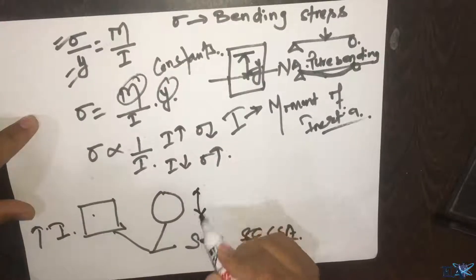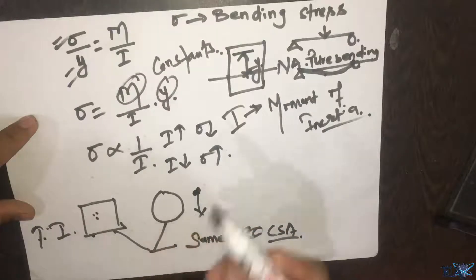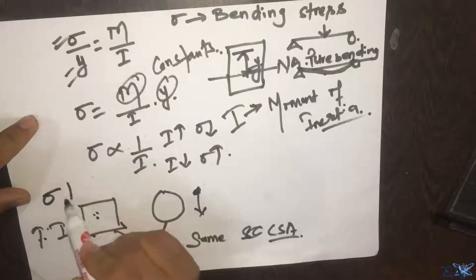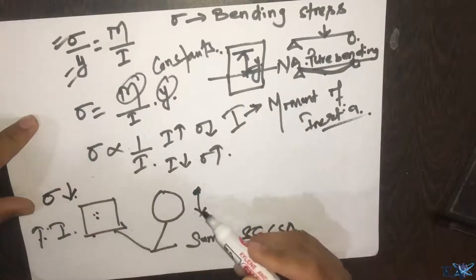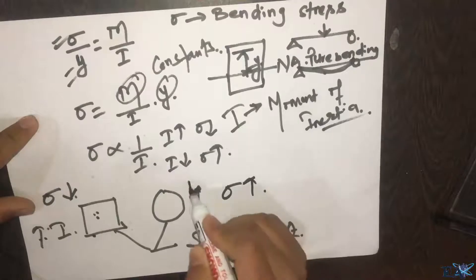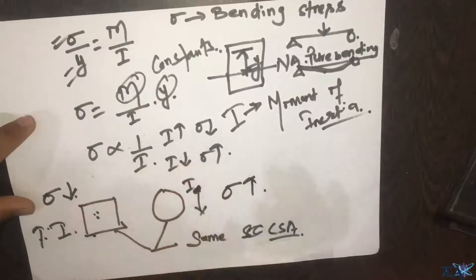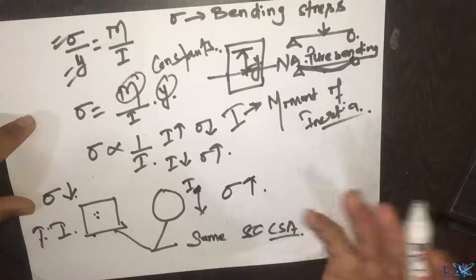The circular section has lower moment of inertia. If the rectangular section has higher moment of inertia, then σ is lower. If the circular section has lower moment of inertia, then σ is higher. Due to this reason, we don't go for circular sections in case of beams.